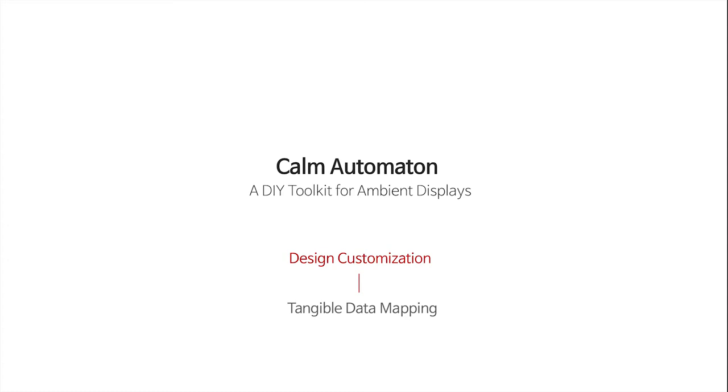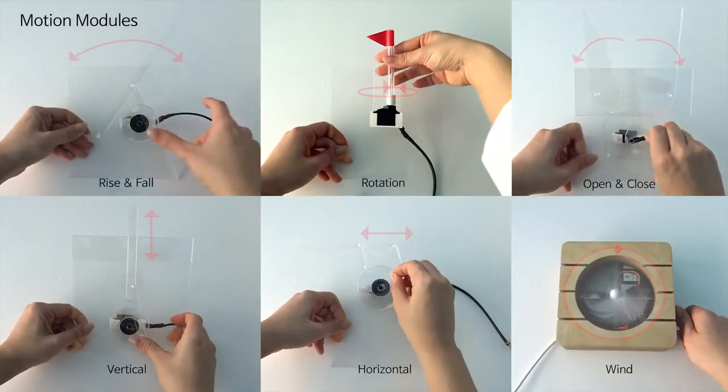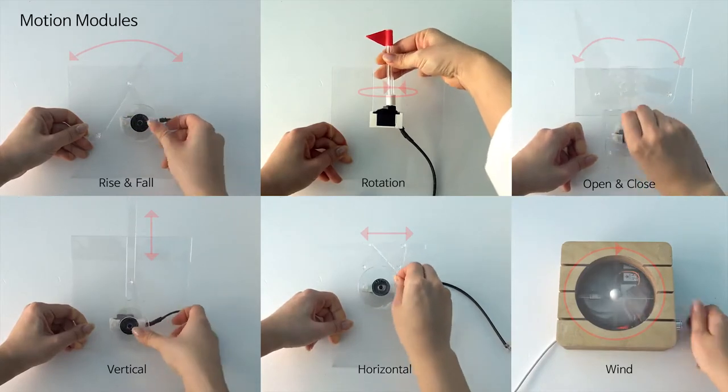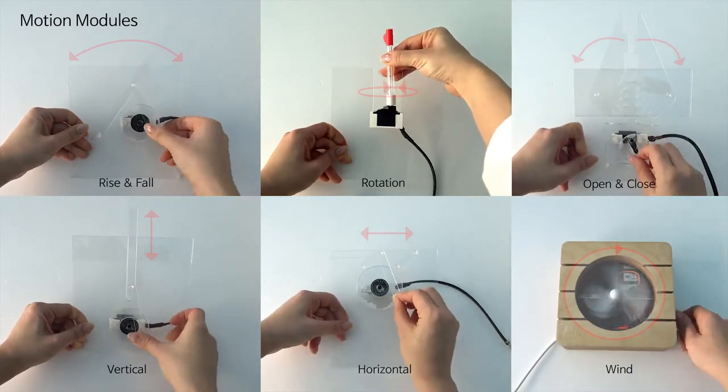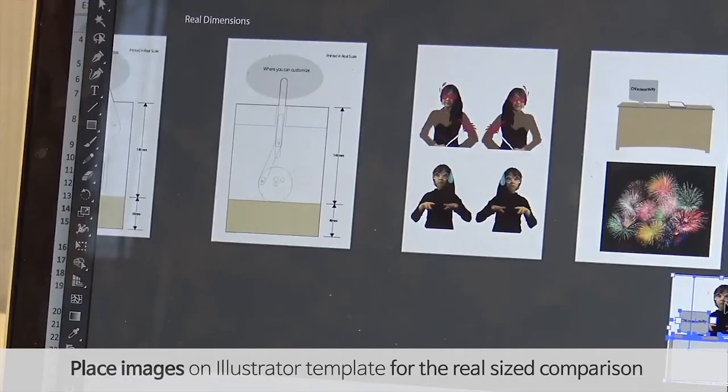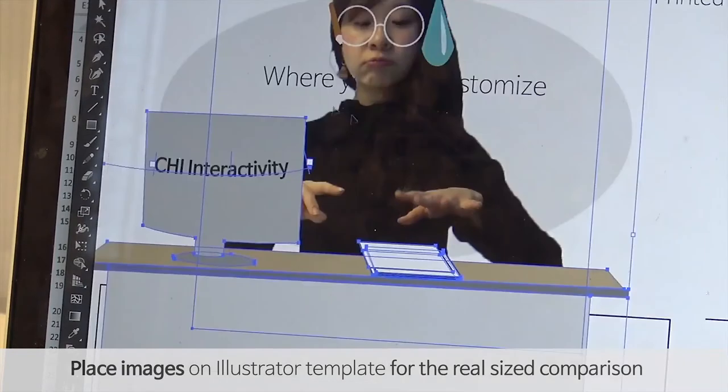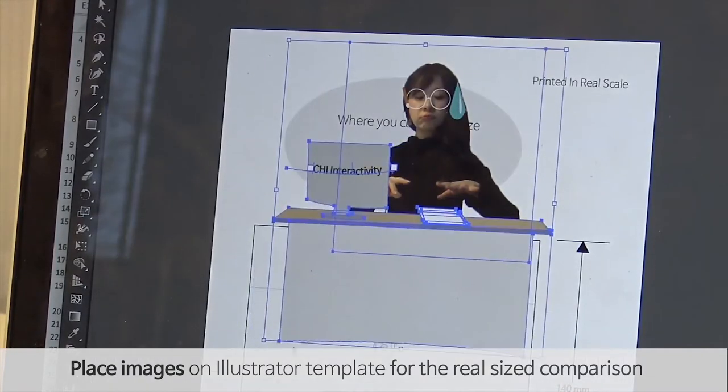Designing a personalized ambient display with Calm Automaton is very simple. Calm Automaton provides six different types of motion modules in the form of two-dimensional transparent acrylic plates. We provide a design template in Illustrator where users can plan to design a real-size scale.